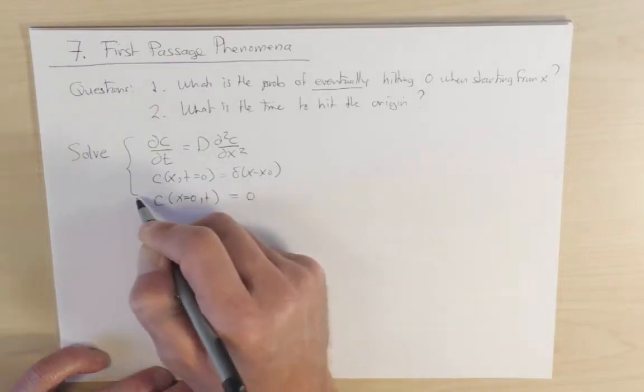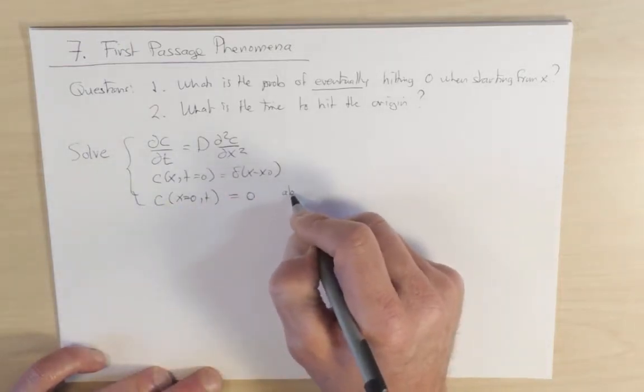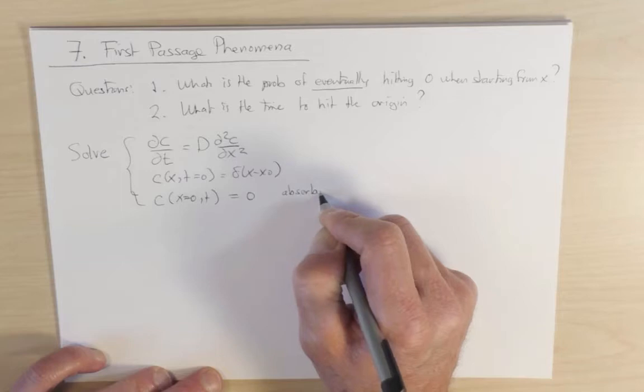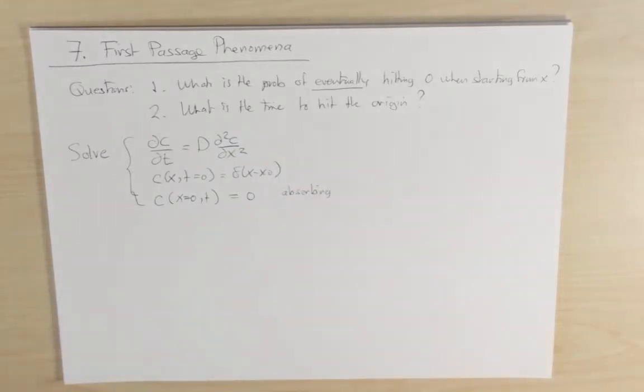This is known as the absorbing boundary condition. And it basically is stating that when a random walker reaches the origin, the problem is over. Pictorially, we can think of putting an infinite cliff at the origin, and for any random walker that strays into the negative half line, they basically fall off the cliff and die. And so the question of first passage also can be formulated as a question, what is the probability that a random walker survives up to time t?